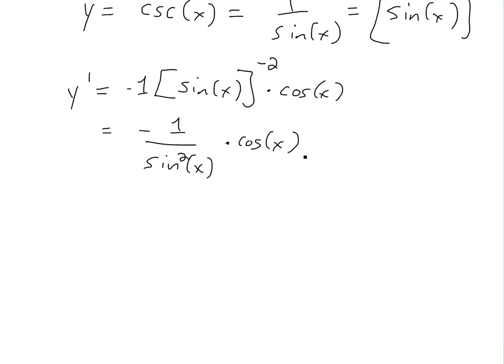We could keep simplifying this, write this as negative 1 over sine of x. Split this up into 2 sines, so another sine of x. The sine squared of x equals sine x times sine x, and then put this cos x over here.